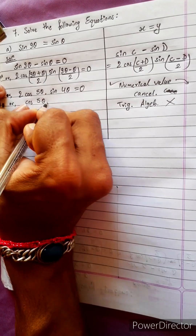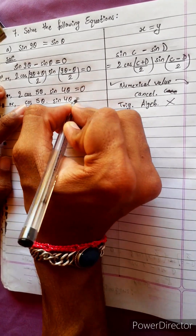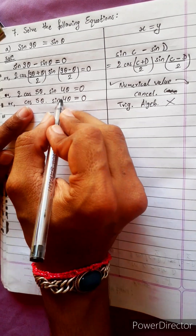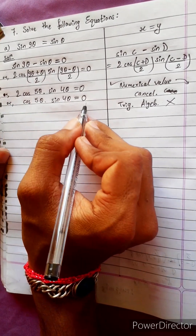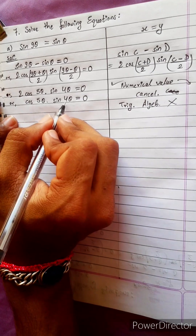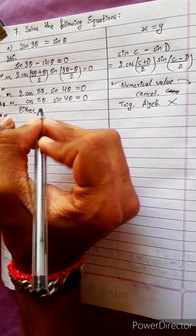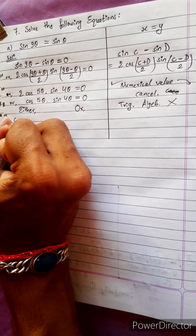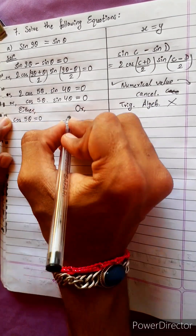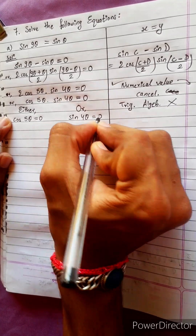cos 5θ into sin 4θ equals 0. Either cos 5θ equals 0, or sin 4θ equals 0.